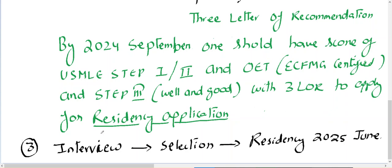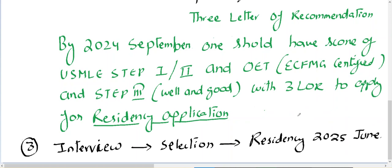If you also have a Step 3 score along with three letters of recommendation, you are ready to apply for residency. For example, if you are targeting September 2024 for residency application, you need three letters of recommendation, ECFMG certification, and a Step 3 score to maximize your chances. You will need to purchase an IRAS token, which opens around mid-September.